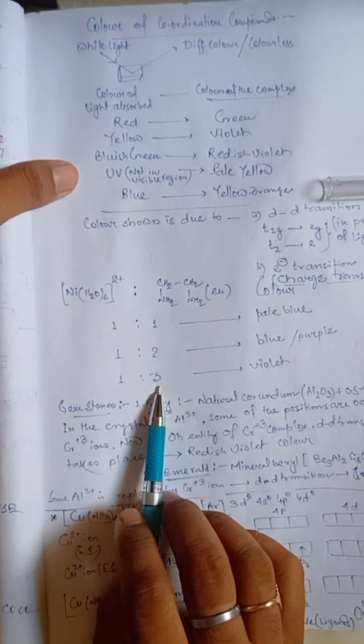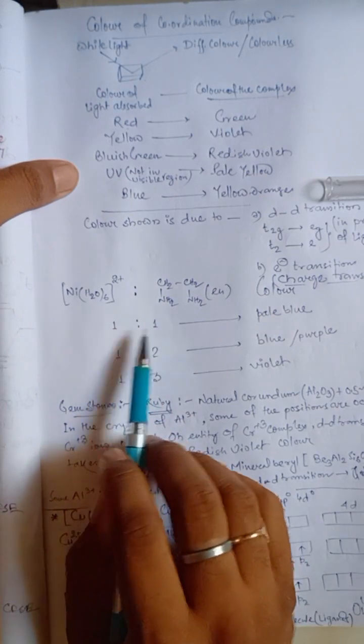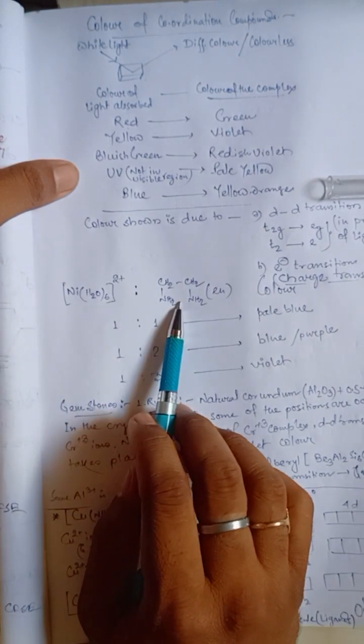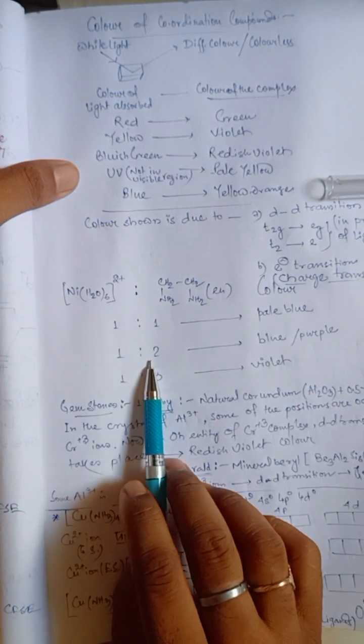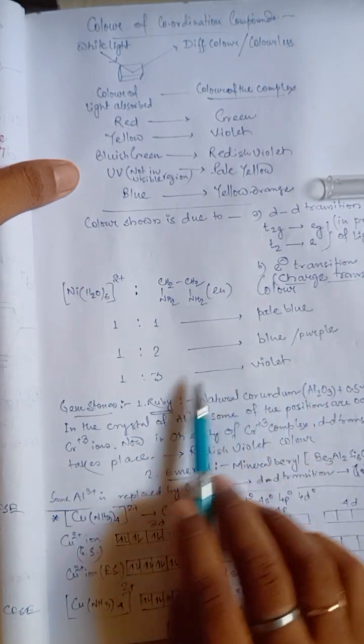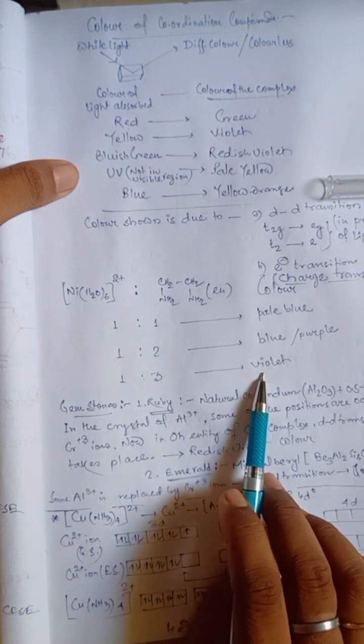Like, when it is 1 is to 1 with nickel and ethylene diamine, we get pale blue color. If it is 1 is to 2, we get blue or purple color. If it is 1 is to 3, we get violet coloration.